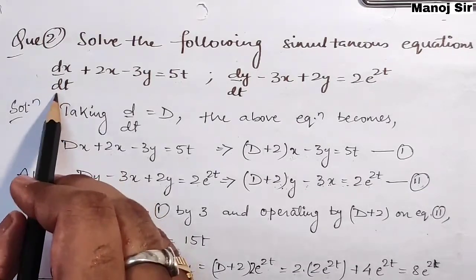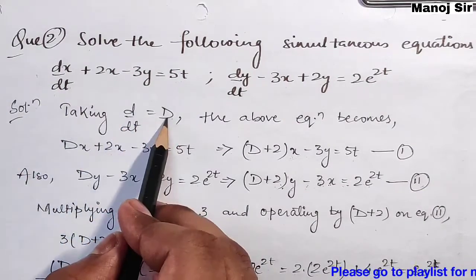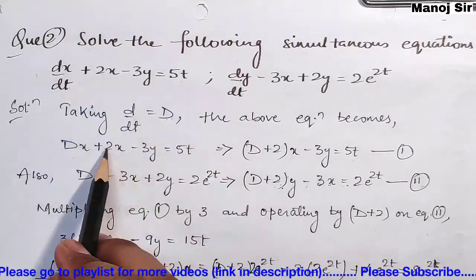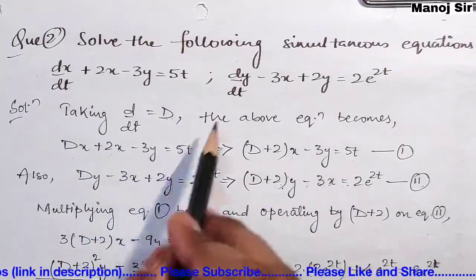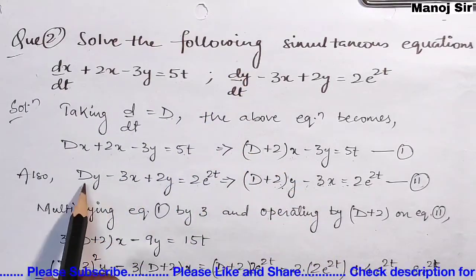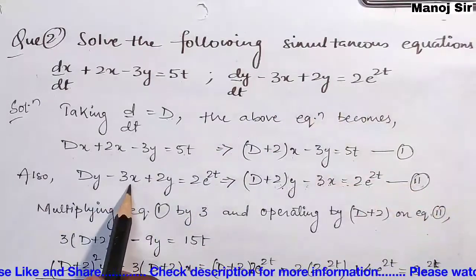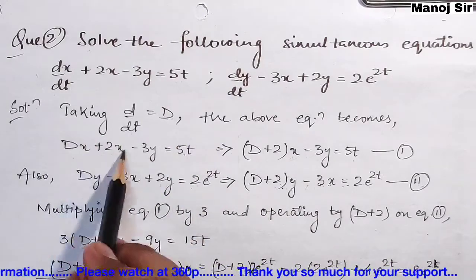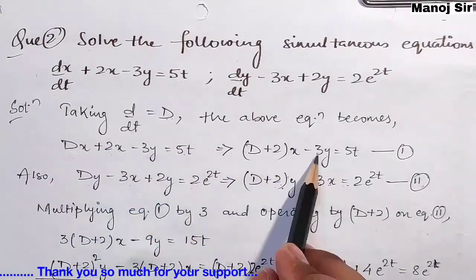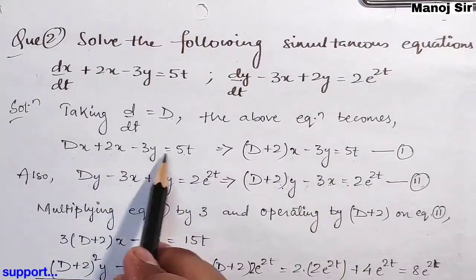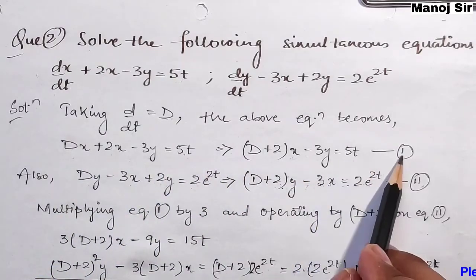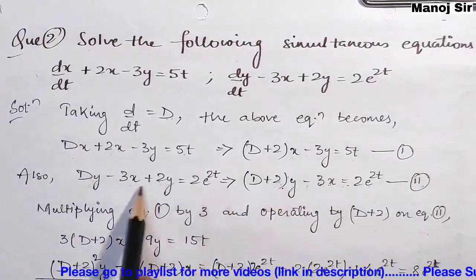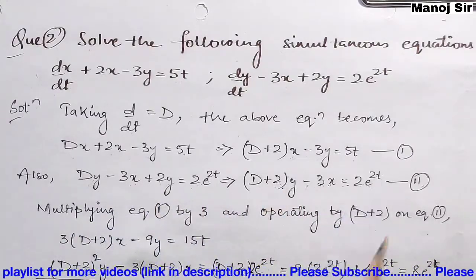Taking d/dt = D (capital D), the equations become: (D + 2)x − 3y = 5t (equation 1), and (D + 2)y − 3x = 2e^(2t) (equation 2).